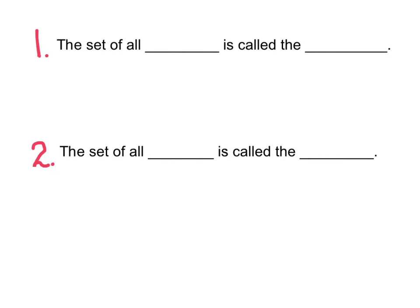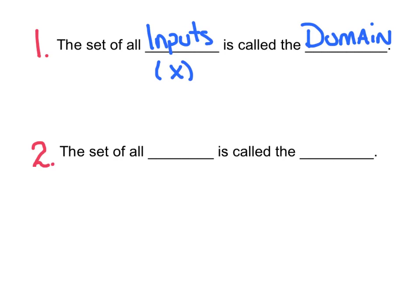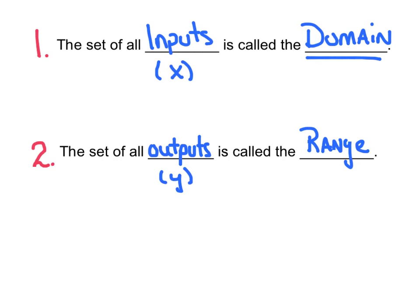Number one, the set of all inputs is called the domain. Inputs are your x values, and that is going to be referred to as our domain. Number two, the set of all outputs is called the range, and outputs is going to be our y value. So we can use these words interchangeably — inputs referring to domain, and outputs referring to range.